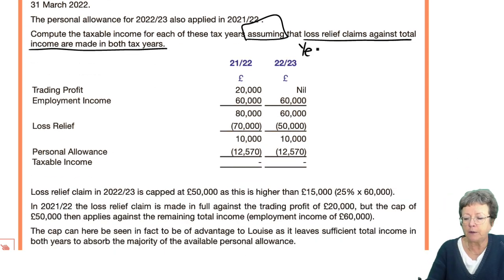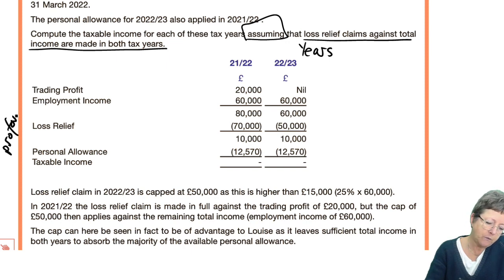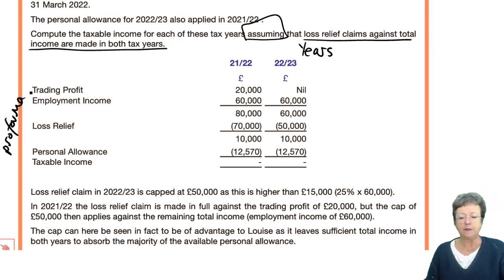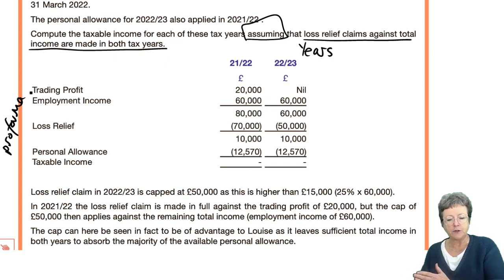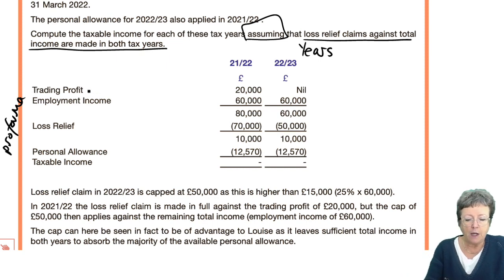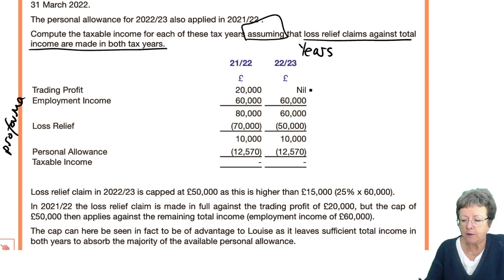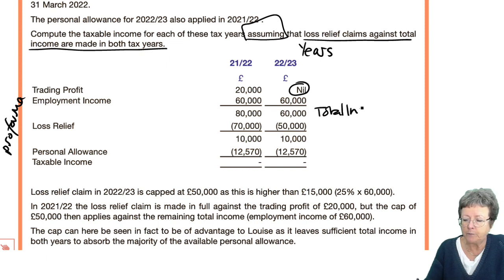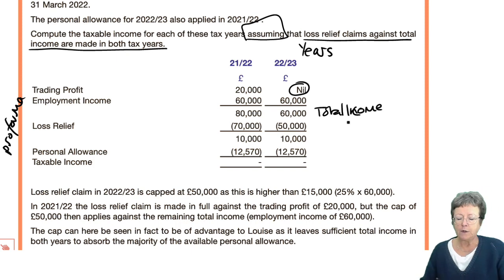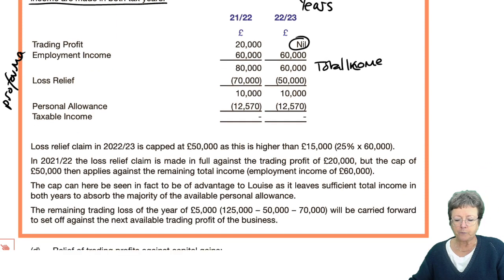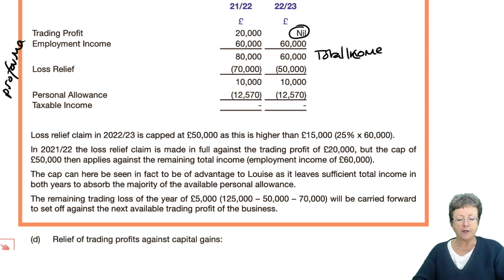Again, years across the top in your pro forma, pro forma down the side. Copy the information into the answer — we have the profit, the loss year, and her employment income. That's her total income. Let's see what the notes have to say about this.